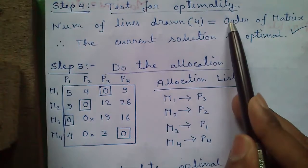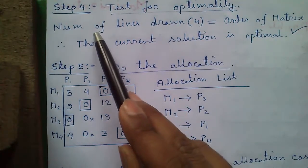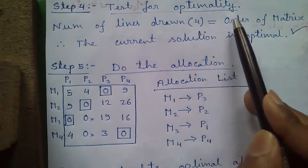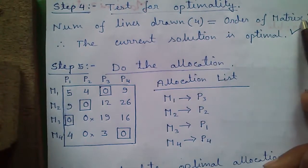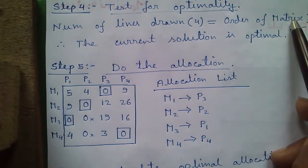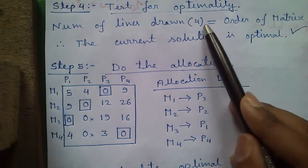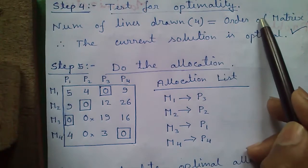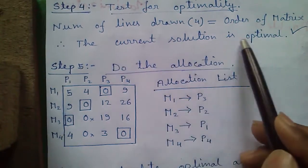Step 4: test for optimality. The number of lines drawn is 4 equals to or not the order of matrix. Here the number of lines are 4 and order of matrix is 4 cross 4. So number of lines and order of matrix is same. So the current solution is optimal.